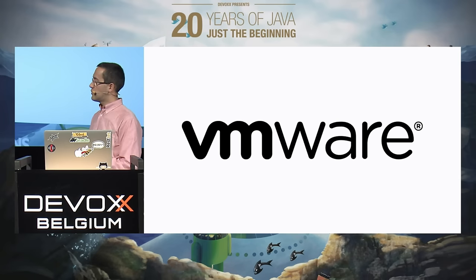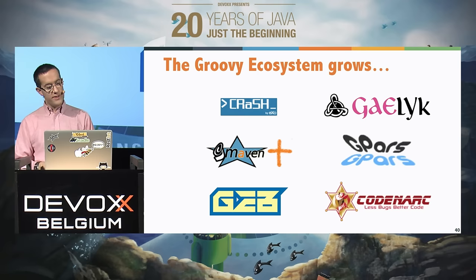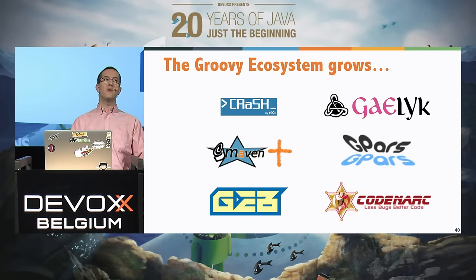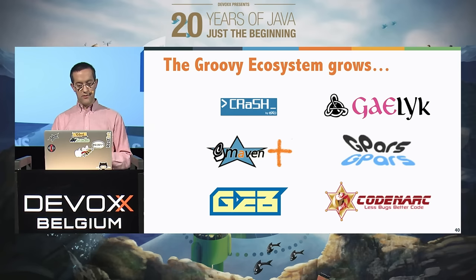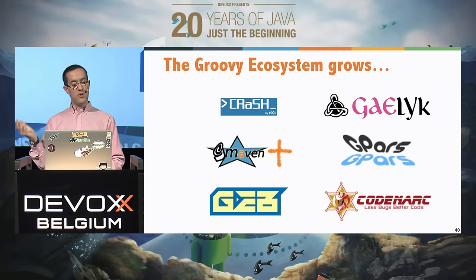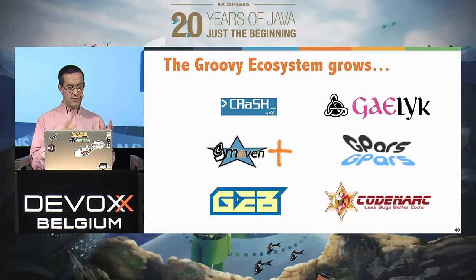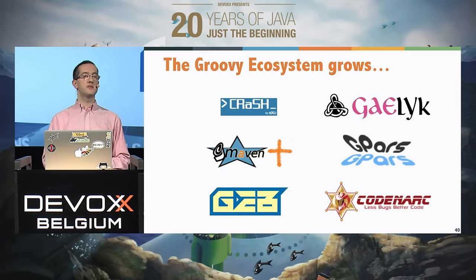That year, SpringSource was acquired by VMware, so we all joined VMware. The Groovy ecosystem grew with projects like GPars — our concurrency and parallelism framework — Geb, a functional integration testing tool for web APIs, and CodeNarc, a static code analysis tool similar to a mix of FindBugs, PMD, and CheckStyle, but specific to Groovy. Also GMaven+, for building Groovy-based projects in Maven.